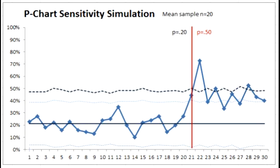Hi, this is Richard Scoville, and I am here to talk about p-charts, and in particular the issue of detecting changes using p-charts in the way that most improvement teams use p-charts. This is a simulation done in Microsoft Excel using an add-in package, a Monte Carlo simulation package called AtRisk, which gives us some facility to model distributions — in this case, the binomial distribution — with the sample sizes and p-values noted on the screen.